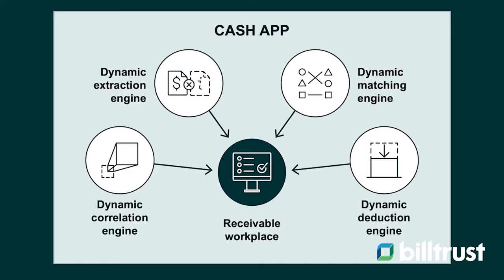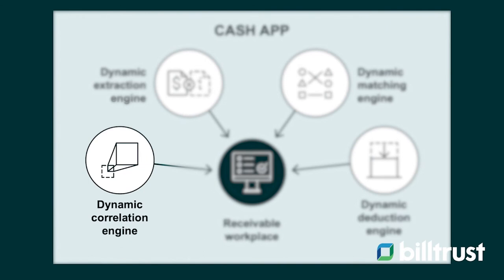We then import the file types you choose — whether lockbox, credit card payments, or electronic payments — getting those files from the financial institution and importing them into the Cash App system. The very first step is the dynamic correlation engine, where all electronic payments go. Electronic payments come in, and we also import emails from your AR inbox. Our system scans the payments against the emails to try to identify if it has found a valid remit on its own.